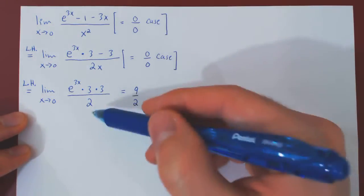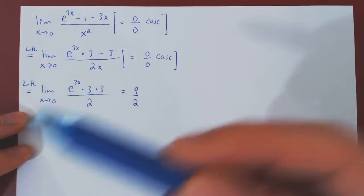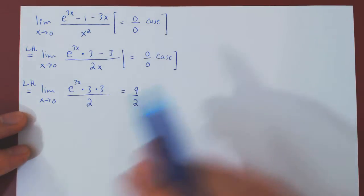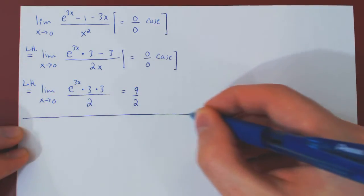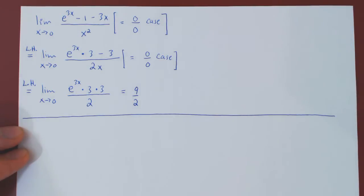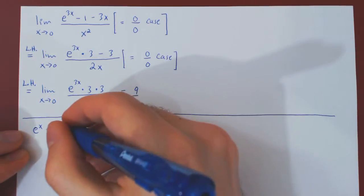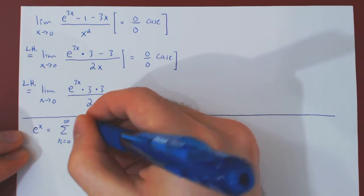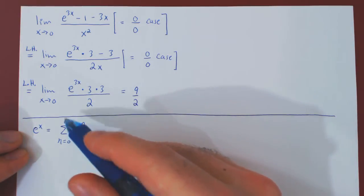That was the first solution. Now let's attack this problem in a completely different way — not using L'Hôpital's rule, but using the Maclaurin series of e to the x. Recall that e to the x equals its Maclaurin series for all values of x: the sum of x to the n over n factorial as n ranges from 0 to infinity.